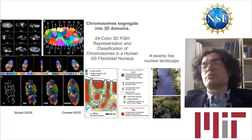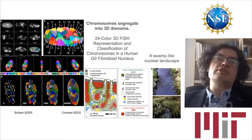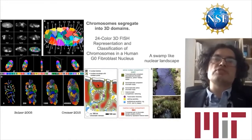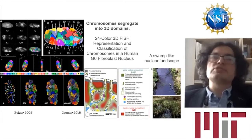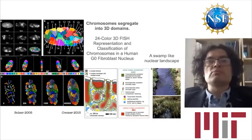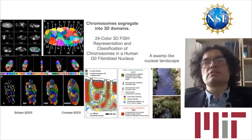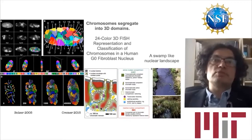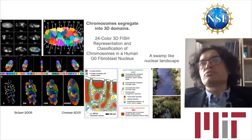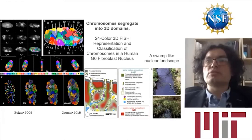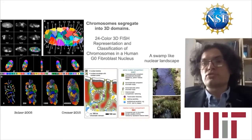Moreover, at higher resolution using electron microscopy or super-resolution light microscopy, you can observe that the nuclear volume is divided into dense regions and sparse regions. The sparse regions have a lower density of chromatin, whereas the dense regions characterize inactive nuclear compartments — heterochromatin — which harbors genes that are switched off. You can approximate the nuclear structure as a swamp-like landscape with channels that allow rapid biomolecule transport and islands of dense regions that slow down interactions and transport.